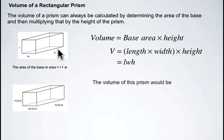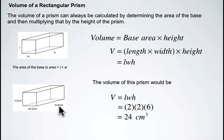Let's try this example. In this example, we have a length of 2 cm, a width of 2 cm, and a height of 6 cm. So the volume would be calculated by making our substitutions: 2 multiplied by 2 multiplied by 6 equals 24 cm cubed.